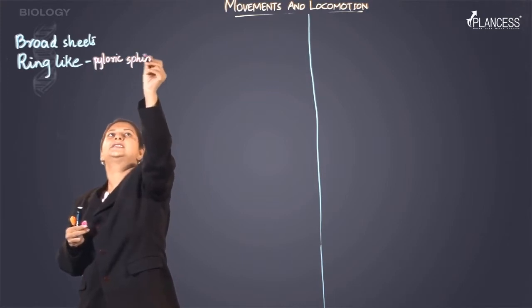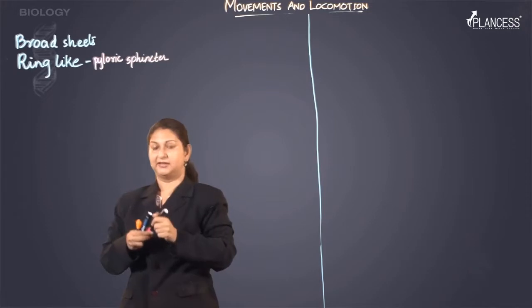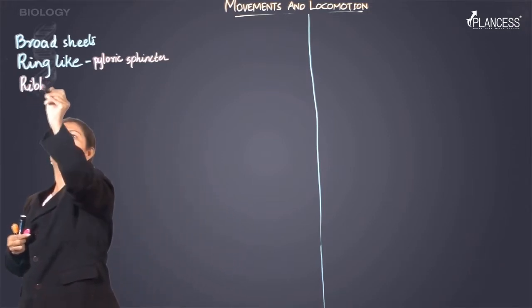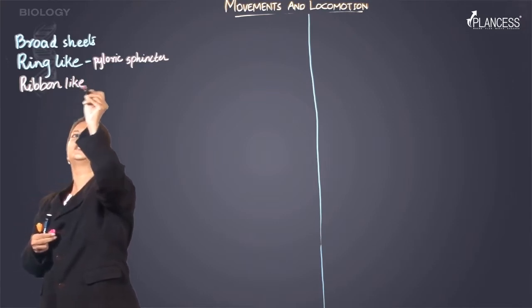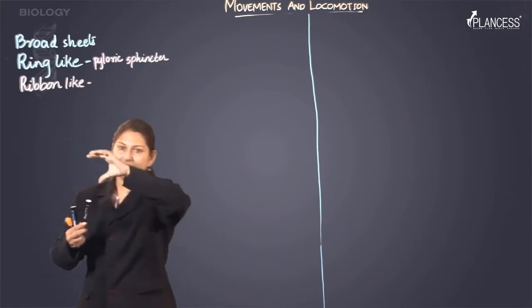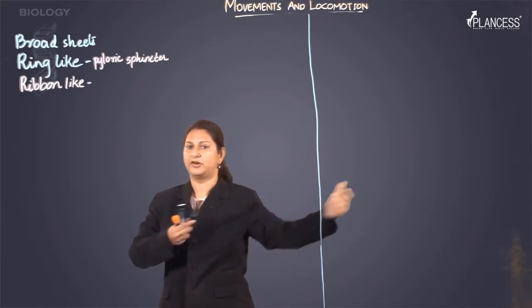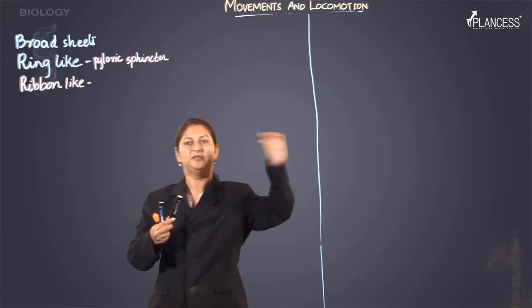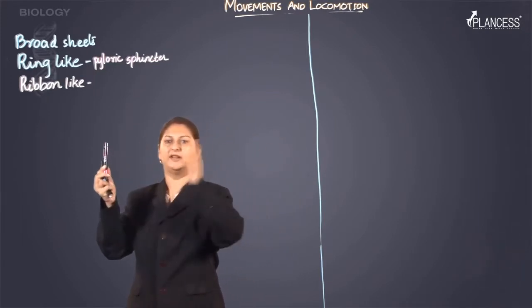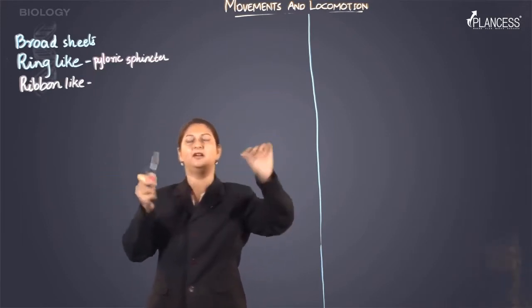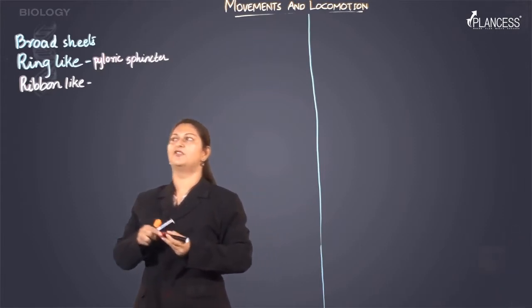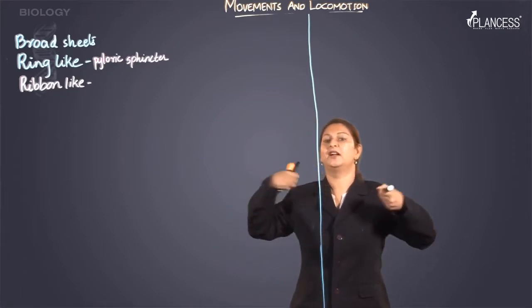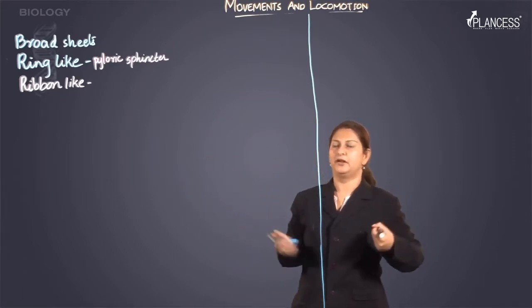The next category is ribbon-like structures, which are arranged along the length of the body — the arms and the legs. Both places need muscle cells running from one end to another, slender and ribbon-like. This kind of muscle arrangement is seen wherever there is elongation of the body part.